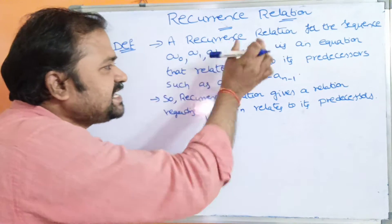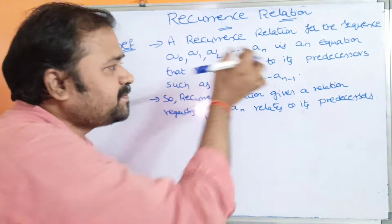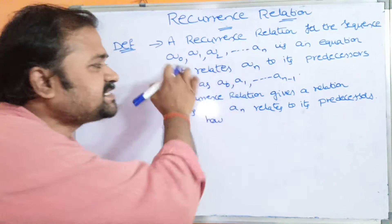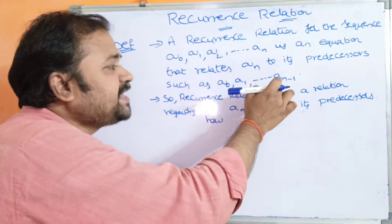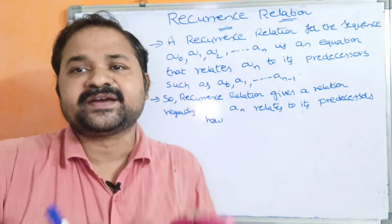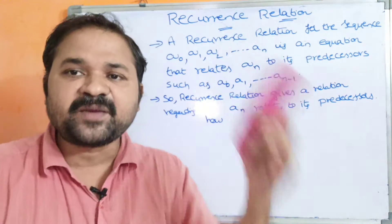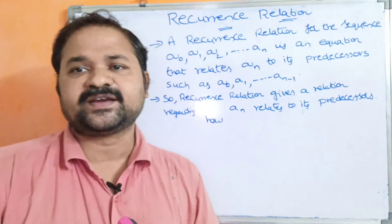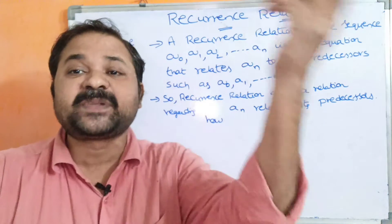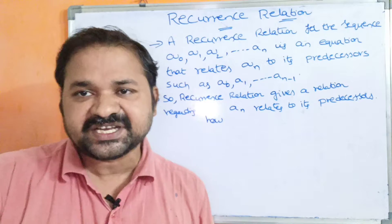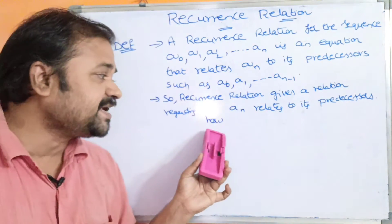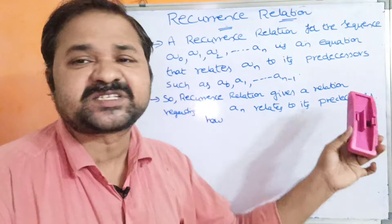If we take the sequence, an is the last item. How does an relate to its previous items — from a0 to an-1? That is nothing but the recurrence relation. How the last item an relates to its previous items, and how we can obtain an item from its previous items — that is the recurrence relation.